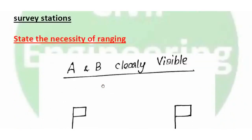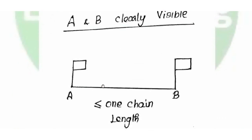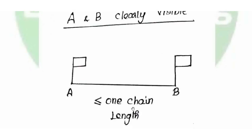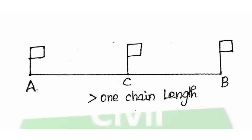The necessity of Ranging: When A and B are survey stations, if the distance between A and B is greater than one chain length, we need to fix intermediate points and do ranging. This is the first condition requiring ranging.